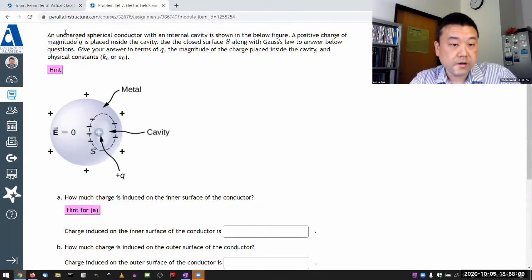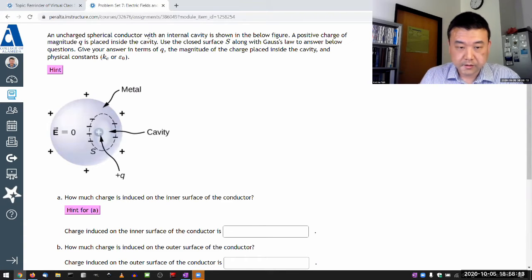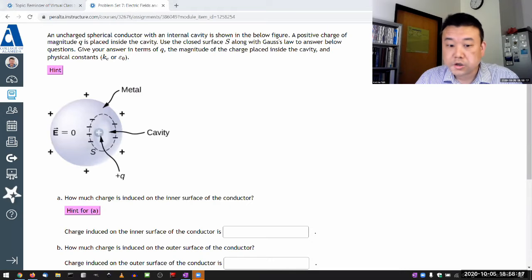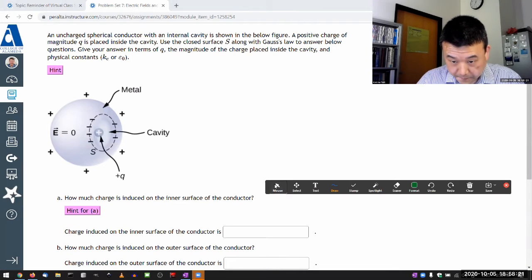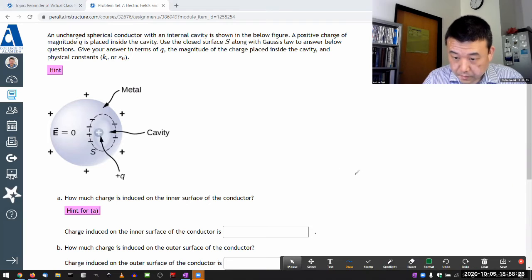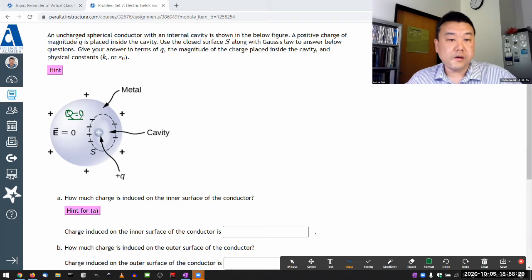It says an uncharged spherical conductor, and that's important to hear because what it's telling me is that the charge that's on the sphere itself is zero. So the net charge on the sphere itself is zero. Uncharged spherical conductor with an internal cavity.